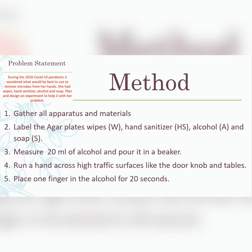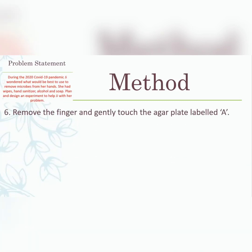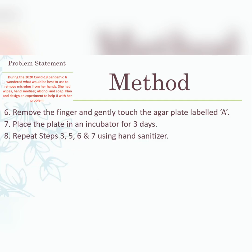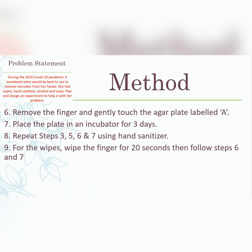Place one finger in the alcohol for 20 seconds, rubbing gently. Remove the finger and gently touch the agar plate labeled A. Place the plate in an incubator for three days. Then repeat steps three through seven using hand sanitizer. For the wipes, since you can't measure 20 mL, simply wipe the finger for 20 seconds, then touch the respective agar plate and place it in the incubator.